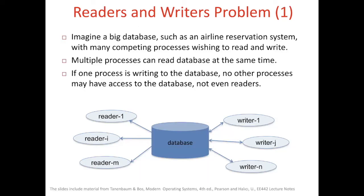Another classical inter-process communication problem is the readers and writers problem. Imagine a big database such as an airline reservation system, with many competing processes wishing to read and write. Multiple processes can read the database at the same time. If one process is writing to the database, no other processes may have access — not even readers. We have several readers and N writers. Readers only read; more than one reader can read at the same time, but meanwhile there should be no writer writing. For writers, only one writer can write at a time, and while writing, no other writers or readers should access the database.